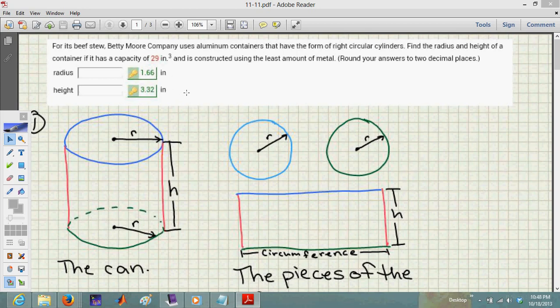We've got a can of beef stew, and we need to know the radius and height of a container if it has a capacity of 29 cubic inches and is constructed using the least amount of metal. First we need a picture. Let's make a picture.